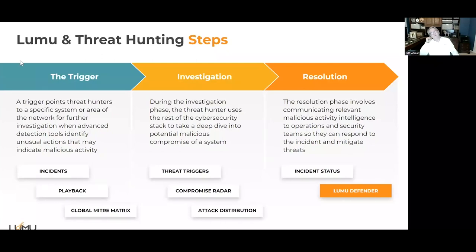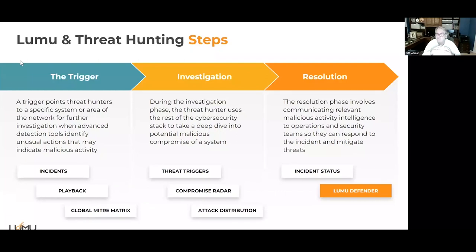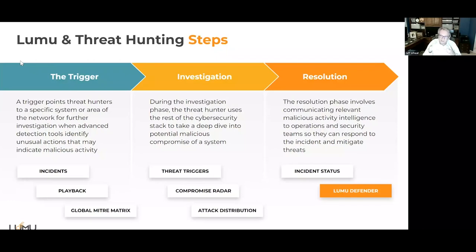These are the Lumu threat hunting steps, showing how things overlay into the three layers — trigger, investigation, resolution. For the trigger, we give you incidents — those are the triggers — plus playback, which is initiated when there's a new IOC, telling you to pay attention. We also give you the global MITRE ATT&CK matrix so you can understand the severity of the actor and know where to react. The attack distribution tells you everyone the threat touched. You can tell the difference between mechanical and human involvement: when it's machined, it looks very regimented and spiky; when it gets random, a human is involved. Whenever a human is involved with the threat activity, they're highly motivated and trying to monetize it — that should set off the Klaxons.